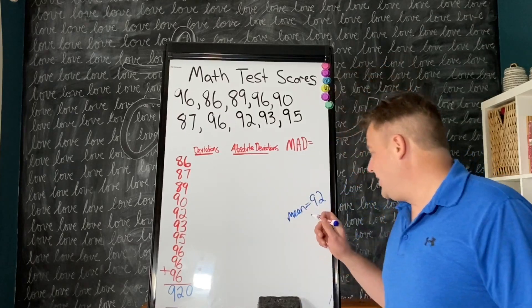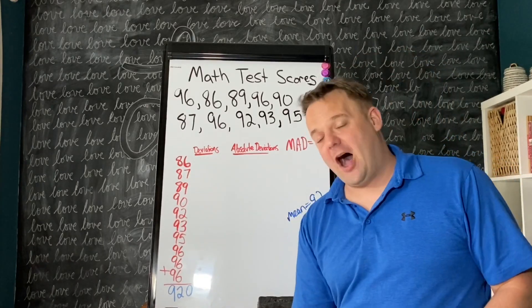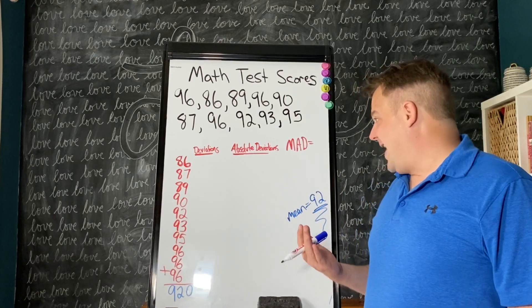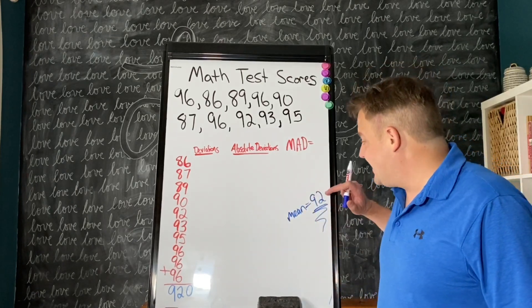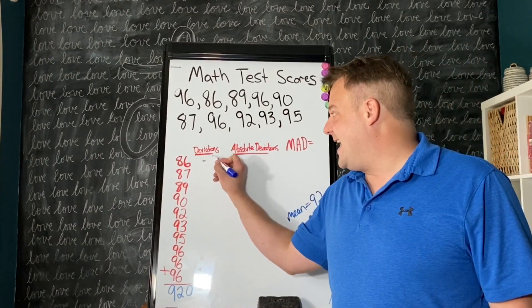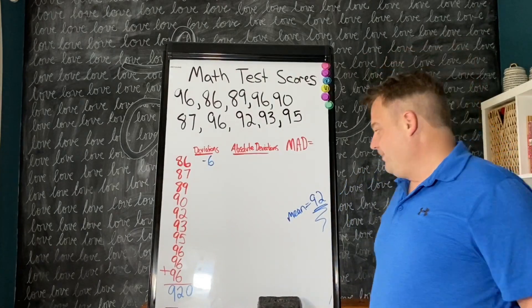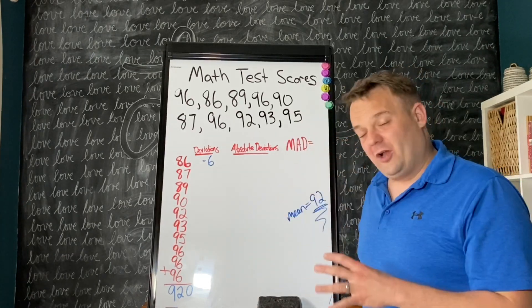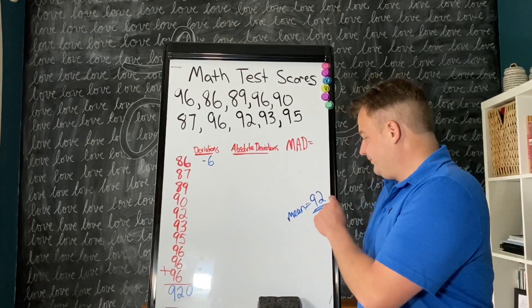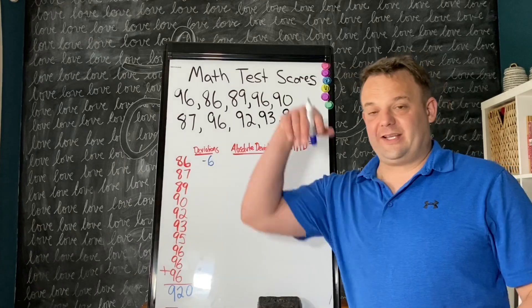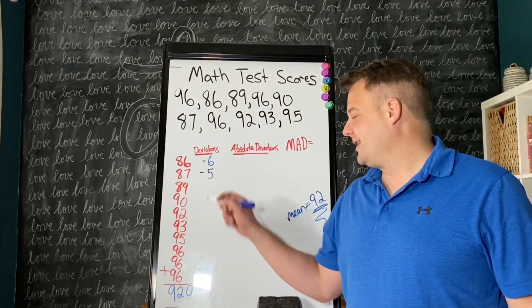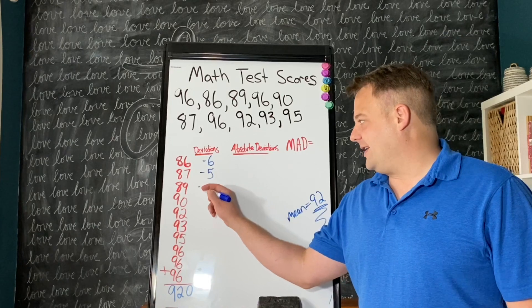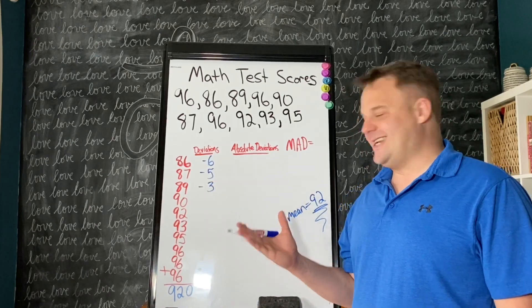So 92 is the mean. 86 is how far away from 92? 92 minus 86 is 6. But because it's less than 92, less than the mean, the deviation is negative 6. The distance from 92 to 87 is negative 5. 92 minus 89 is 3, but because it's less than, it's going in the negative direction, so the deviation is negative 3.